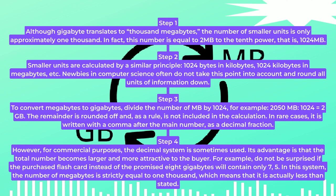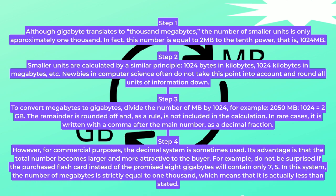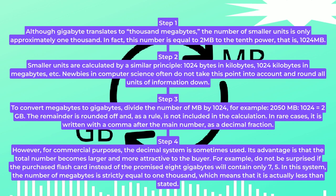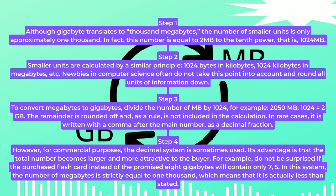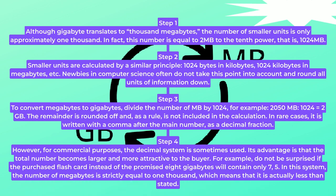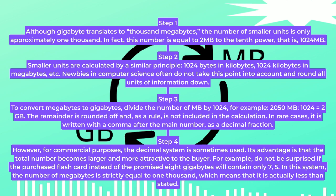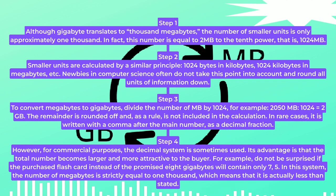Step 2. Smaller units are calculated by a similar principle: 1024 bytes in a kilobyte, 1024 kilobytes in a megabyte, and so on. Newbies in computer science often do not take this point into account and round all units of information down.